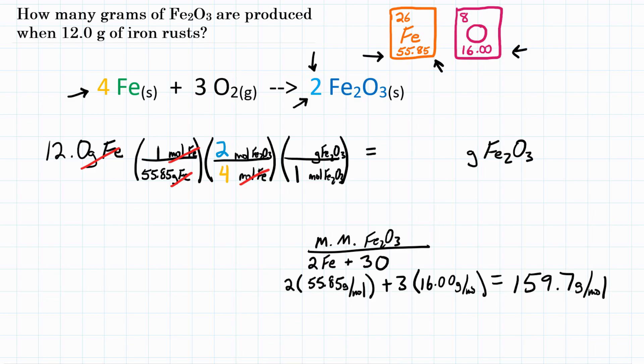So that is what goes into our third and final step. We have on top 159.7 grams, and that is for one mole. So at this point, moles of Fe2O3 cancel, moles of Fe2O3, and we will be left with only grams of Fe2O3.